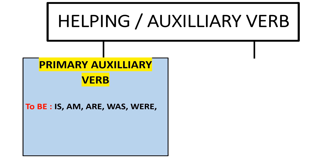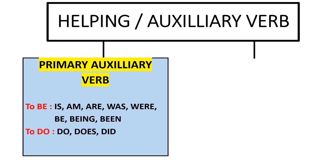The 'to be' primary auxiliary verb forms include: is, am, are, was, were, be, being, been. The 'to do' forms include: do, does, did. And 'to have' forms include: has, have, had.